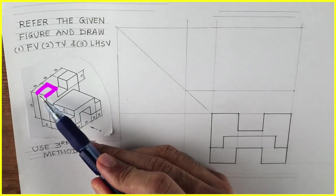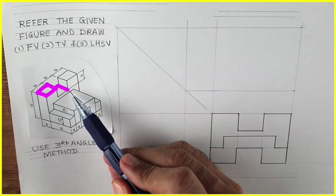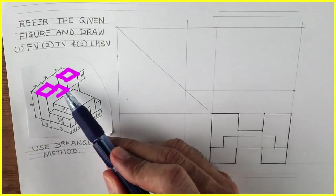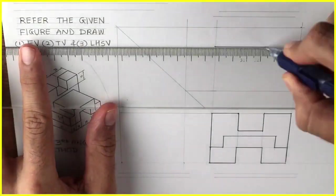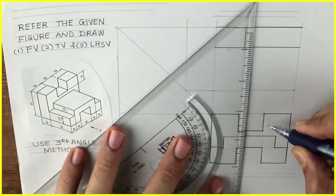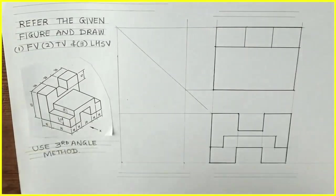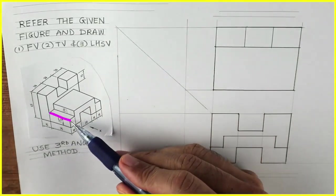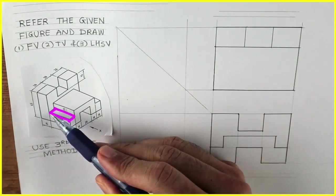Now we will draw top view. In this we can see three rectangles, 20 by 15, so we need to draw that. We can take from front view. See this. Now we can draw this rectangle. There are three rectangles.